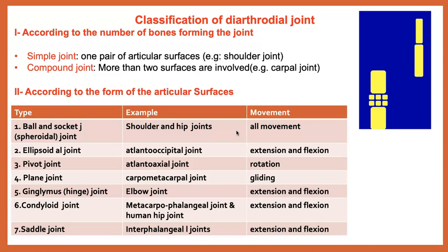The second type is the ellipsoidal joint — for example, the atlanto-occipital joint — which allows extension and lateral flexion. Then we have the pivot joint, like the atlanto-axial joint, which allows rotation. We have the plane joint, like the carpometacarpal joint, which allows gliding movement. Then the ginglymous or hinge joint, like the elbow joint, which allows extension and flexion.